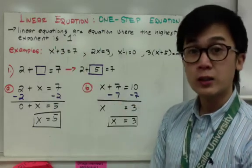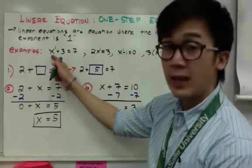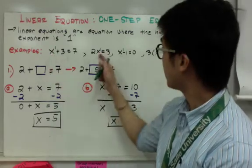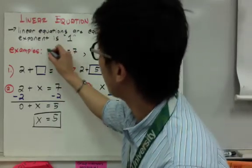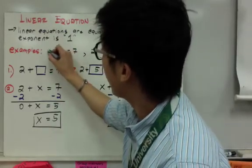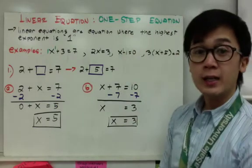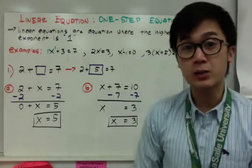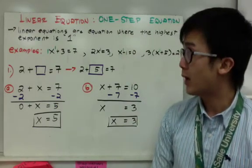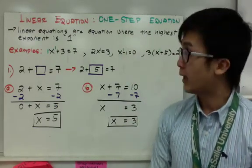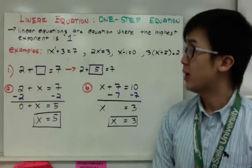Another thing to understand is that for x, there is also an invisible 1 next to x. You don't see it because in algebra we don't usually write 1 when writing algebraic expressions.